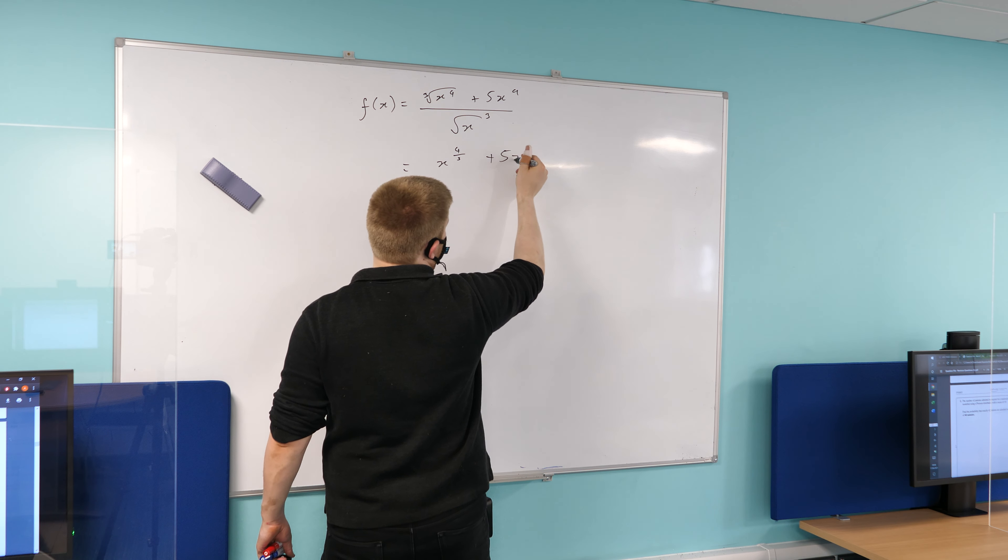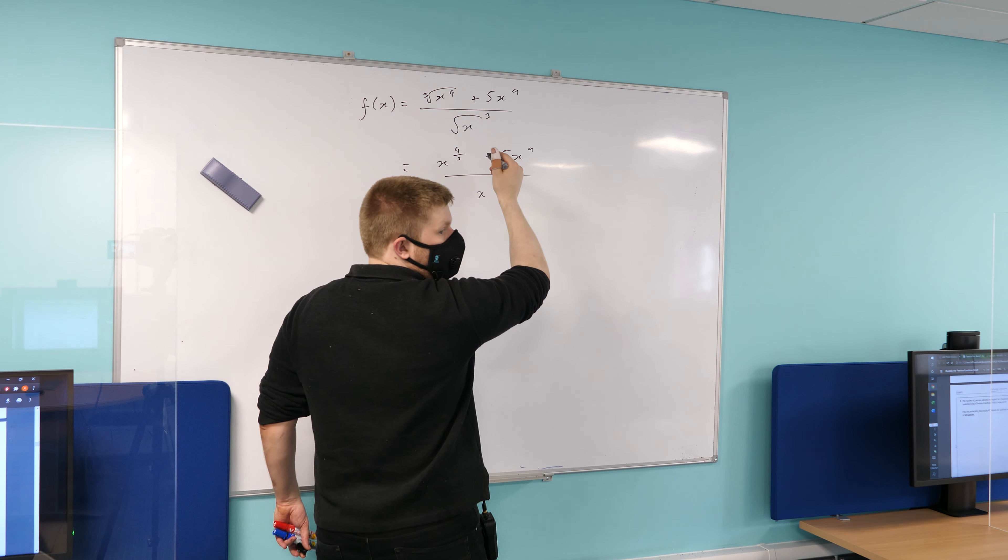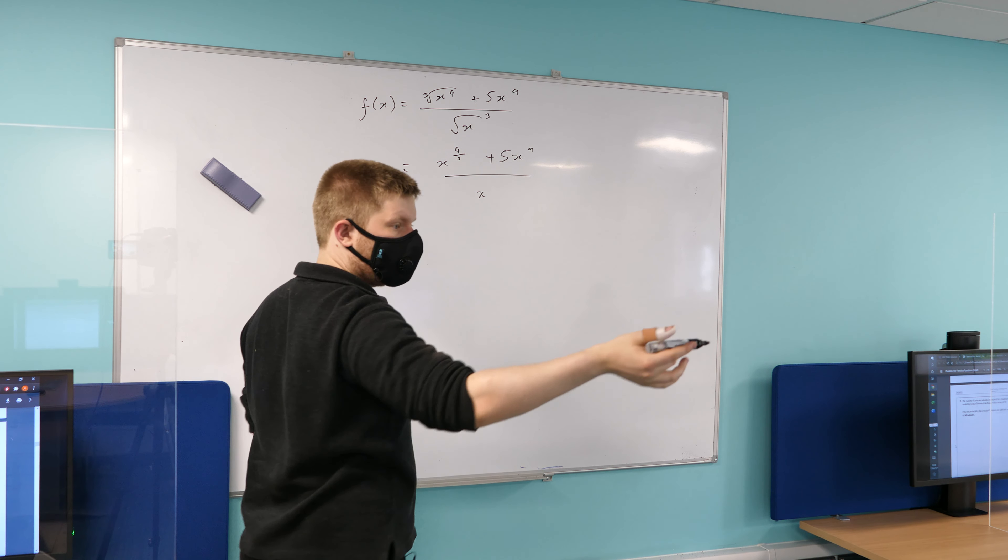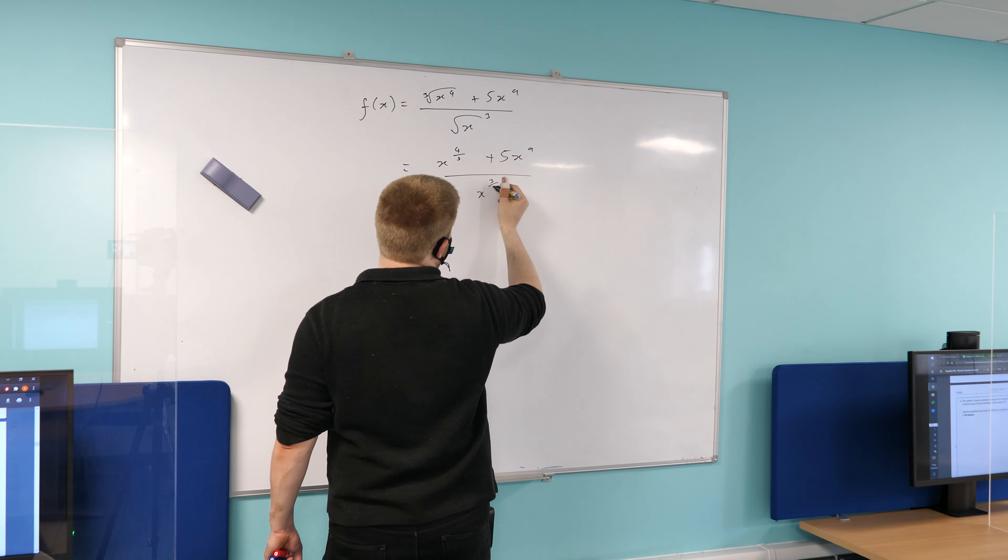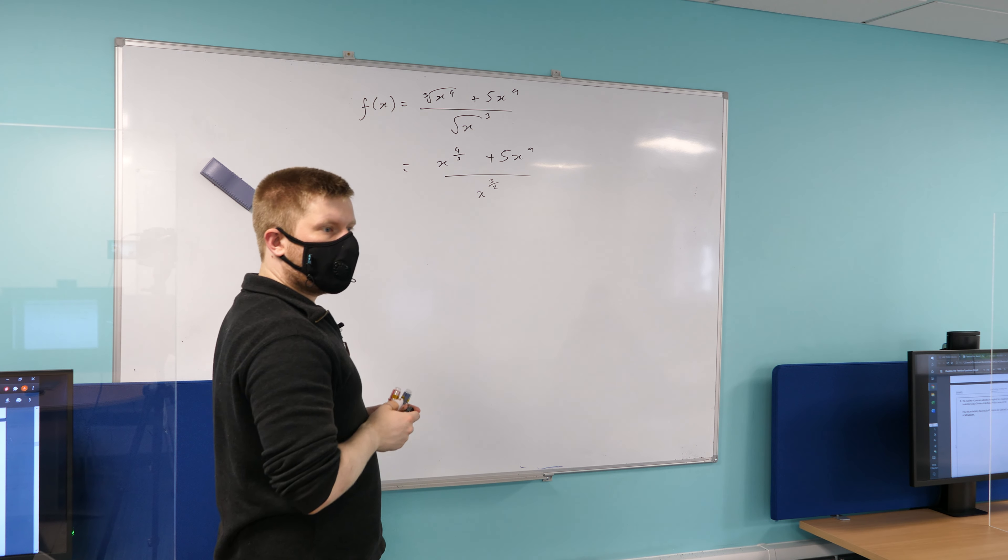And then that stays the same, because that's fine. And the denominator becomes x to the power of what? This root of x cubed. 3 divided by 2. Good. Okay. Good. Now what? Separate both. Good.